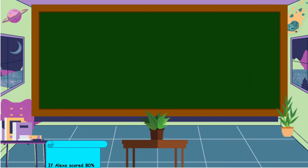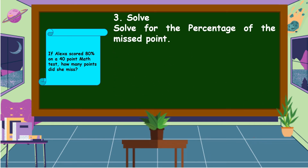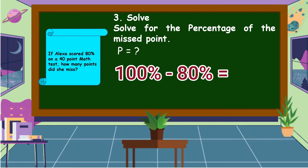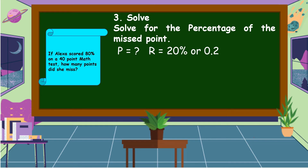We have already a plan, so let's carry out the plan and solve the problem. Percentage is unknown. If Alexa scored 80% on a 40-point math test, 80% is the rate of the correct answers. So what is the percent of the missed points? We subtract 100% by 80%, giving us 20%. Therefore, we're going to use 20% as the rate of the missed points, which changes to decimal as 2 tenths.